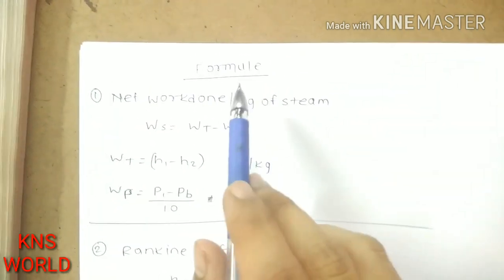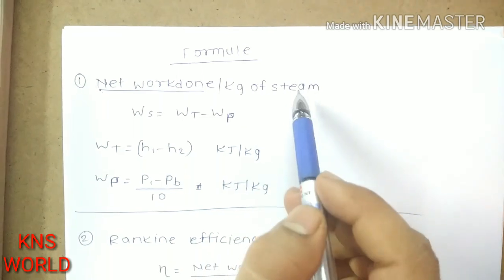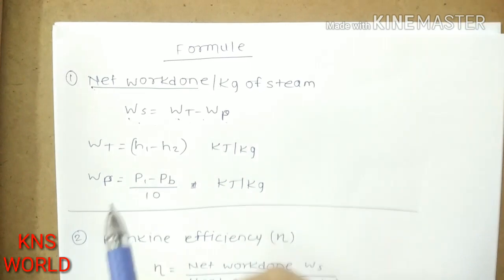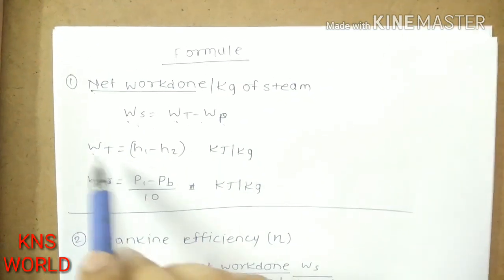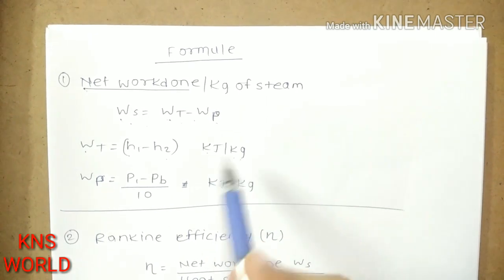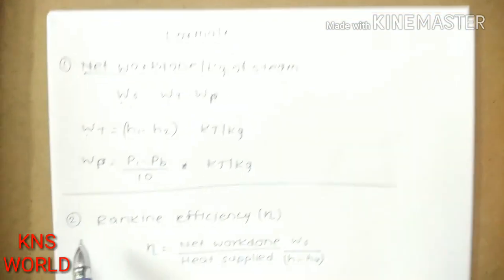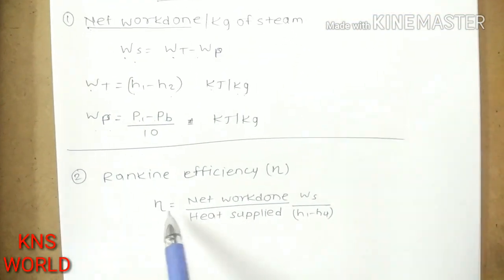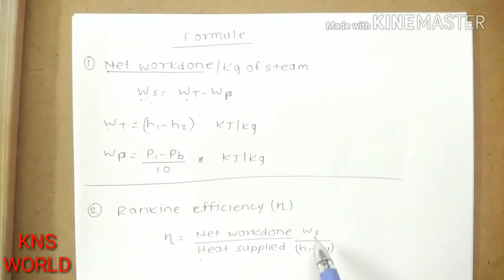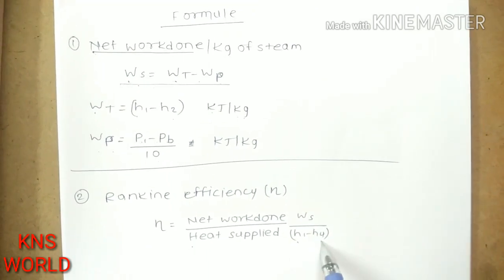We need some formulas. First, net work done per kg of steam: Ws equals turbine work Wt minus pump work Wp. Turbine work is H1 minus H2 kJ per kg, and pump work is P1 minus PB divided by 10. For Rankine efficiency, it is net work done divided by heat supplied, which equals net work done divided by H1 minus H4.